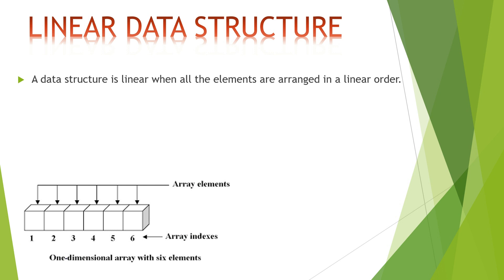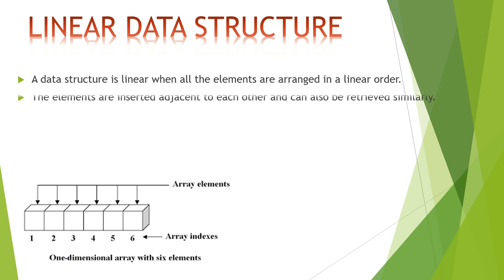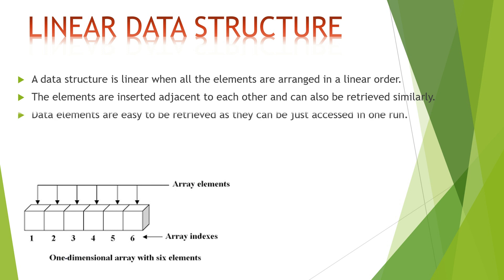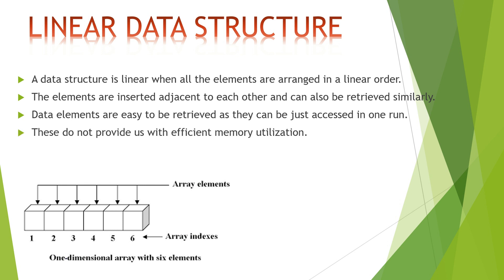A data structure is also considered linear when each element has only one predecessor and one successor — with one exception: the first element has no predecessor and the last element has no successor. Elements are inserted adjacent to each other and can be retrieved similarly. Data elements are easy to retrieve as they can be accessed in one run. Linear data structures are comparatively simpler, though they do not provide efficient memory utilization. Other examples include queues, linked list, and stacks.